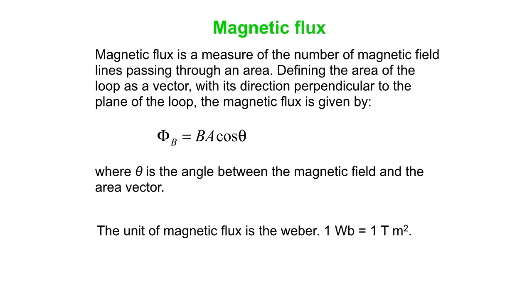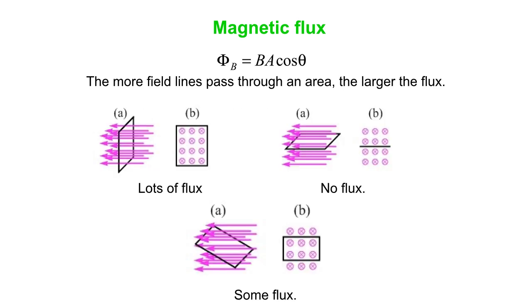Our unit for flux, we can simply write tesla meters squared, field units times area units. Or we can call it the Weber. But one Weber is simply one tesla meters squared.